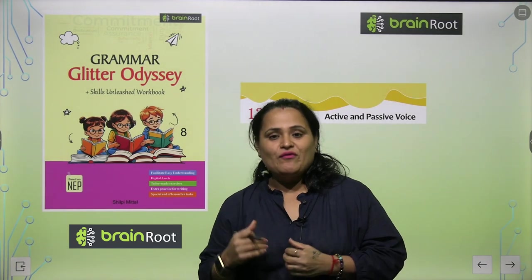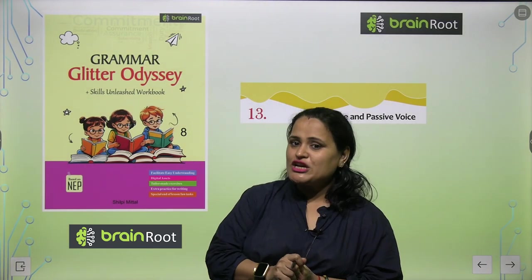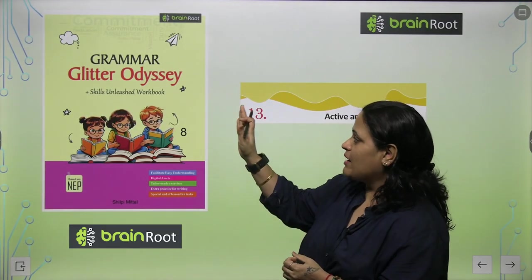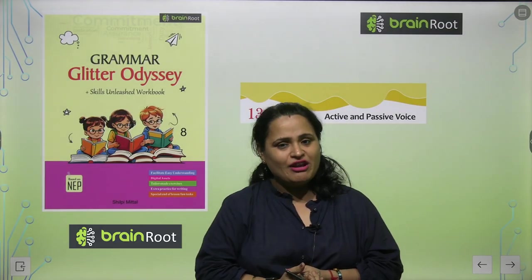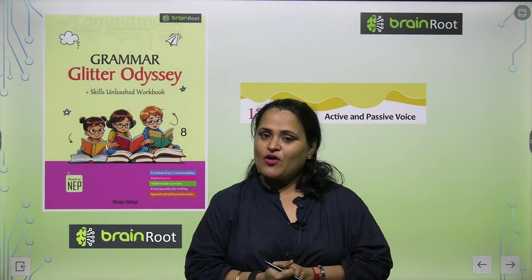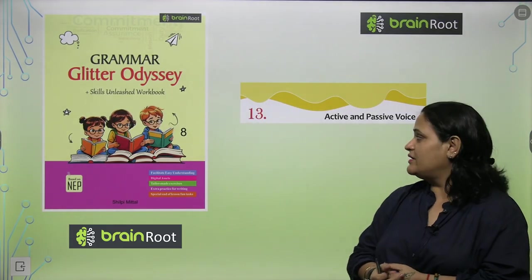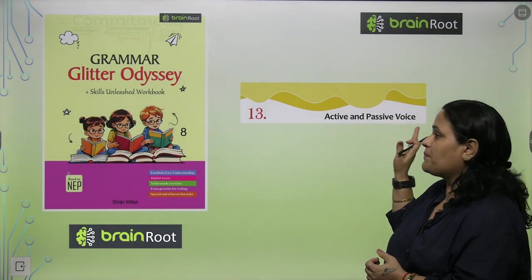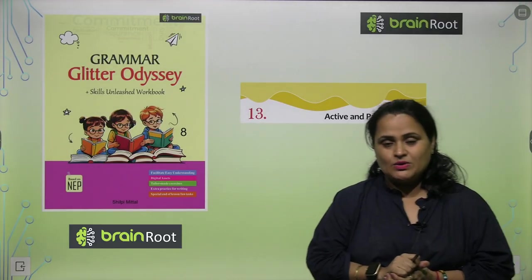Now children, we are on Chapter 13 of your book Grammar Glitter Odyssey by Brainroot from Amit Publishing House, and the chapter name is Active and Passive Voice.